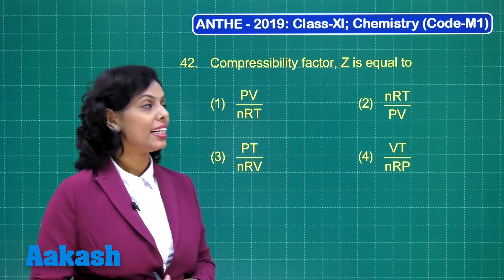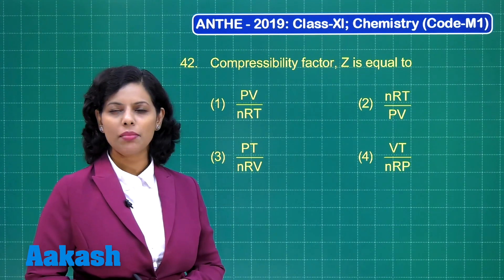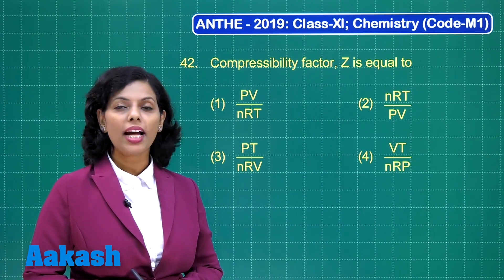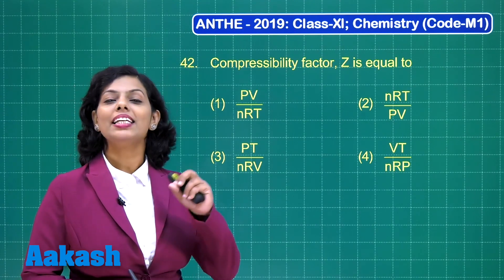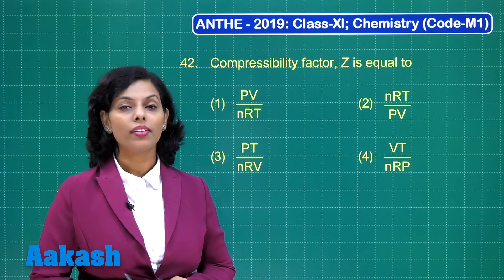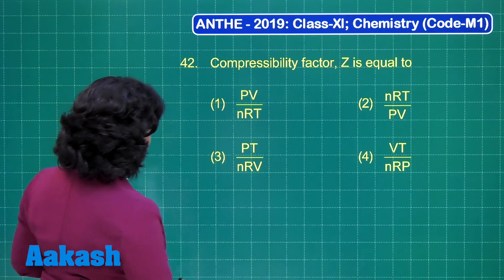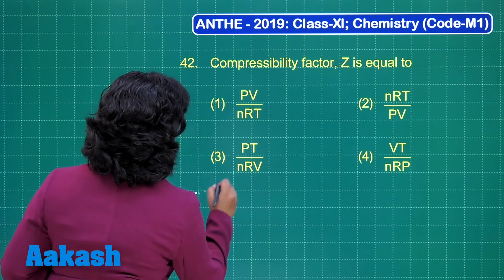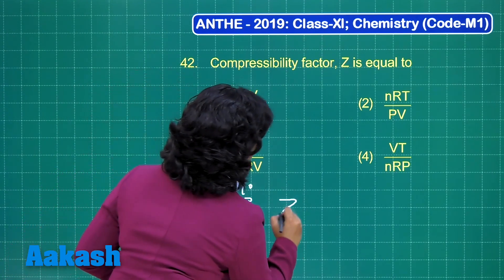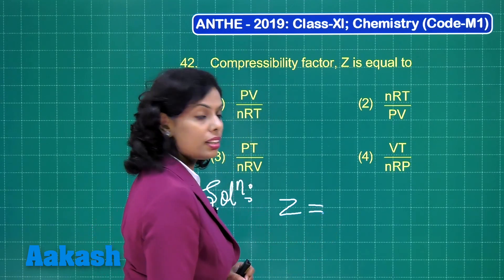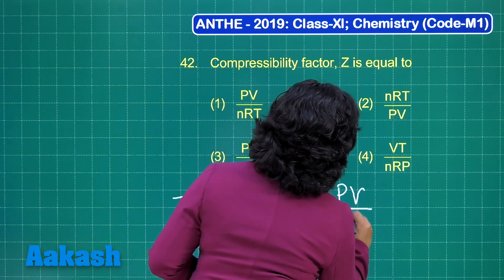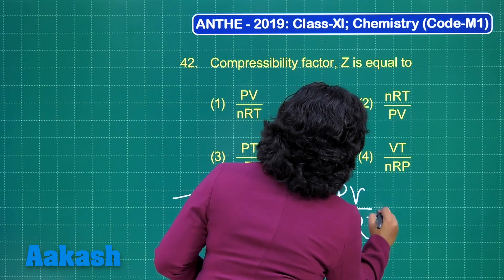Compressibility factor Z is equal to — the compressibility factor is applicable to real gases. We know that for ideal gases PV is equal to nRT, but for real gases it is not so. A compressibility factor Z is included, and as per that, Z is equal to the ratio of PV to nRT.